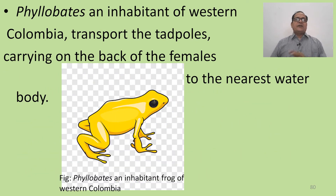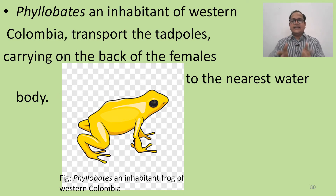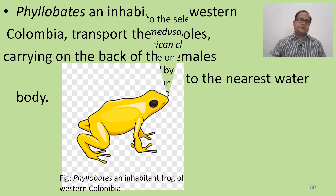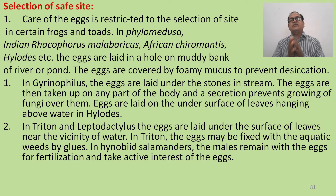Philobetus, an inhabitant of western Colombia, transports the tadpoles by carrying them on the back of the female to the nearest water body. The selection of site is very important — a site where no predator will be found.